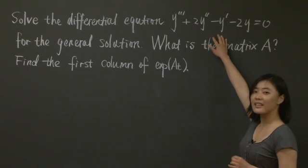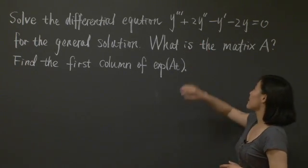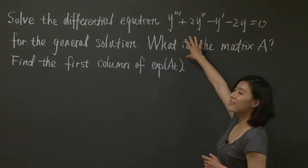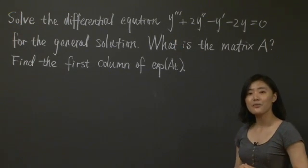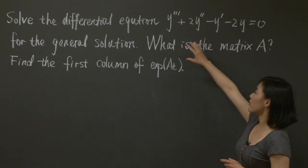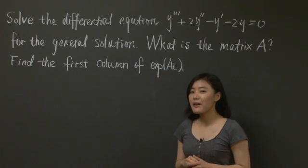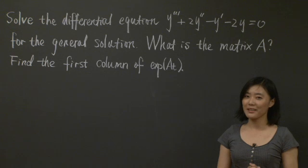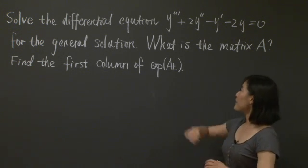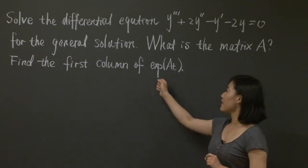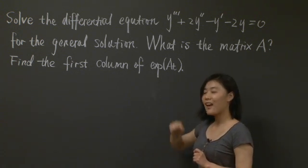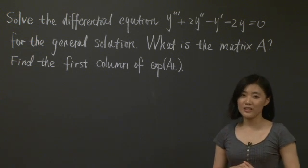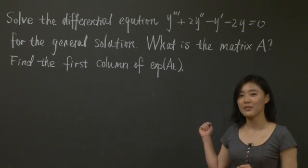y is a function of t, and y and its derivatives satisfy this equation. As you can see, it involves y, y prime, and all the way to its third derivative. So our first goal is to solve this differential equation for its general solution using the method of matrix. The very first thing we should do is to find out which matrix we should be working with. After that, we also want to say something about the exponential of this matrix A times t — specifically, we want to find out the first column of this matrix exponential. Why don't you hit pause now and try to write down this matrix A by yourself.